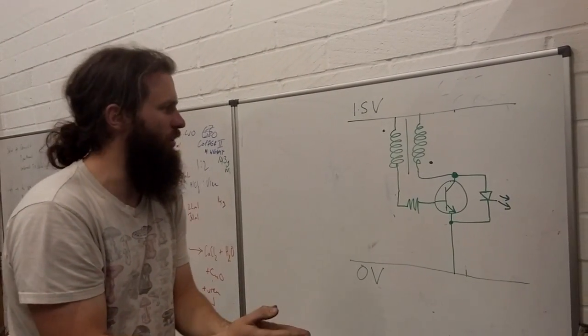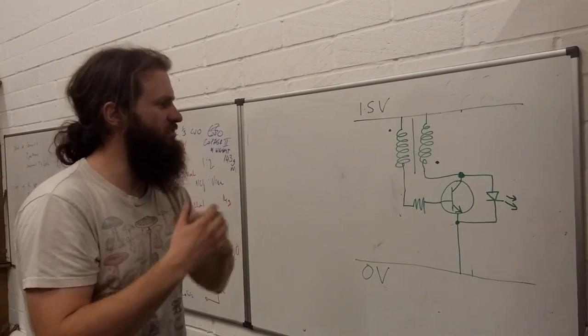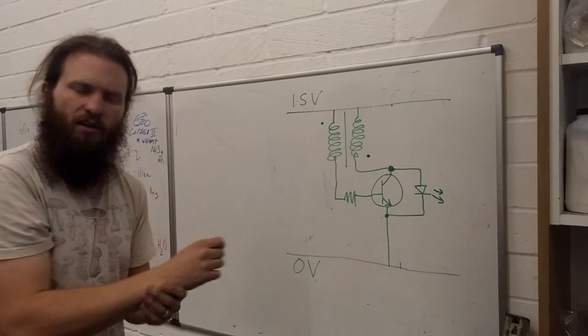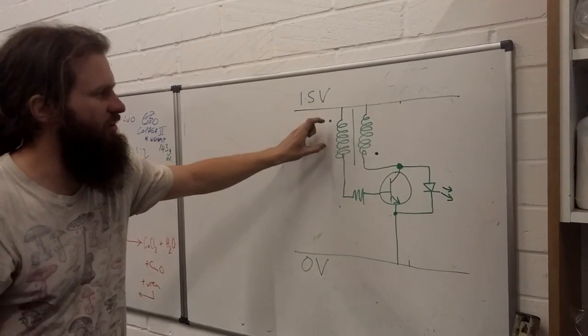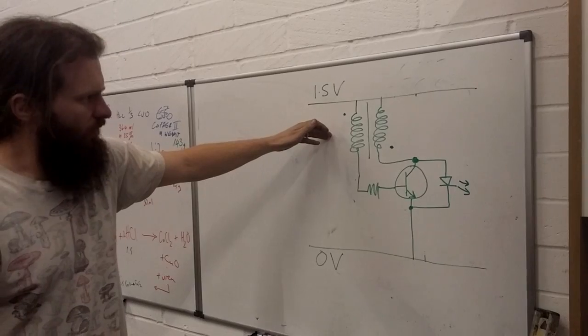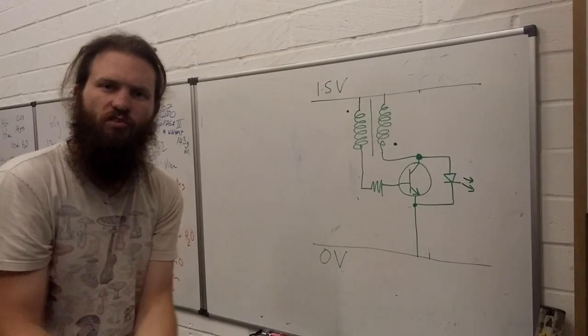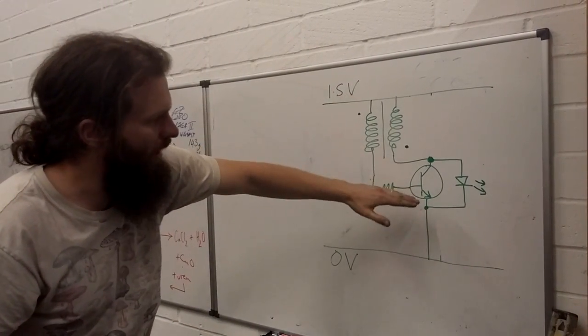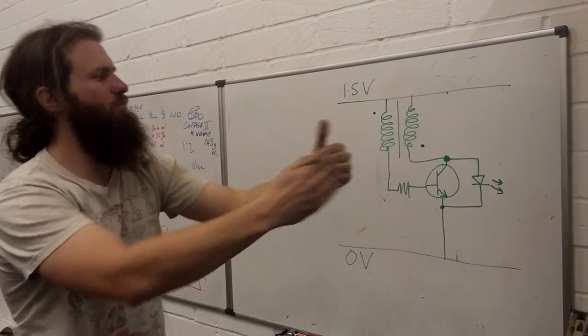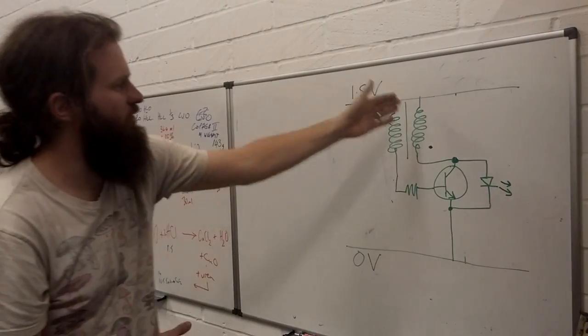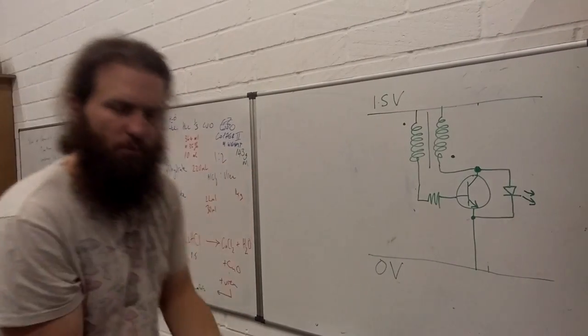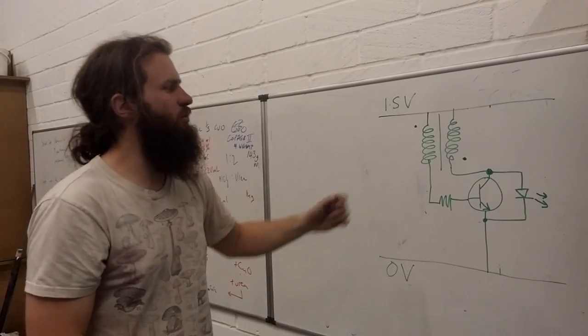Once the transistor is turned completely on, there is no longer a changing magnetic field. We have a static field, but only for an instant. Because what happens is, since we no longer have a changing magnetic field, there is no longer a current induced in our primary winding. Because there is no current induced in it, the current through the base reduces. The current reducing through the base means that the current through the secondary also reduces, which means that our magnetic field collapses slightly. Now, this means that the current in the magnetic field in this coil also collapses.